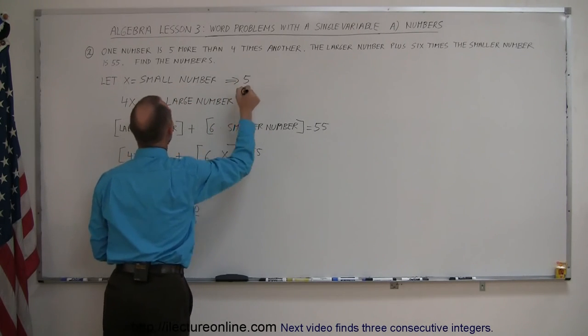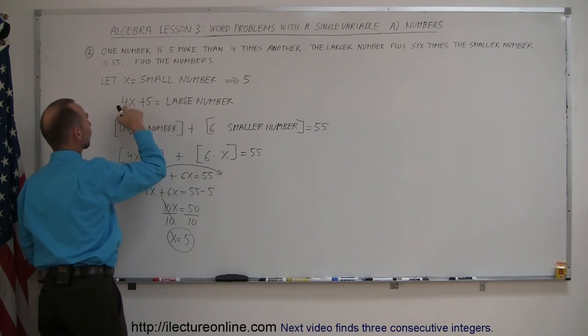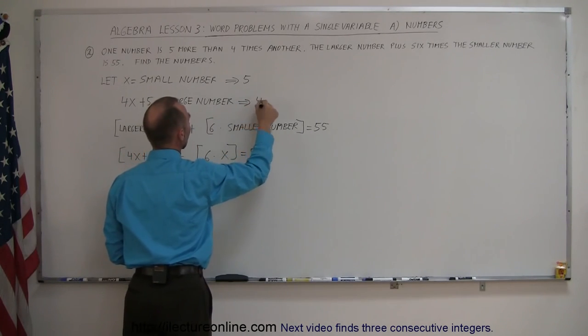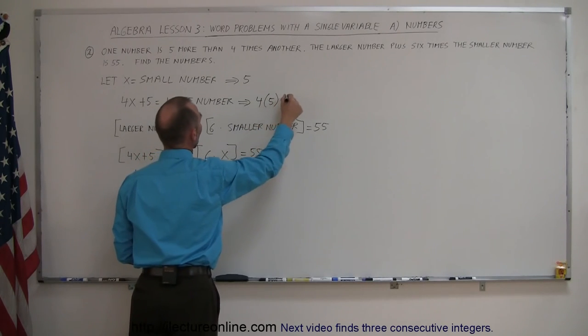that equals 5. And the larger number is 4 times x plus 5. So that's equal to 4 times 5 plus 5.